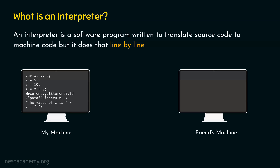So 15 will get stored in variable z. After this, we have the statement document.getElementById('para').innerHTML. document.getElementById allows us to get an element from the HTML document by its ID. The ID of that element must be 'para'. Let us assume there is already an HTML document available with an element called paragraphElement with id 'para'. We can access that element in this JavaScript code with the help of this line. The .innerHTML property allows us to make changes to that element.